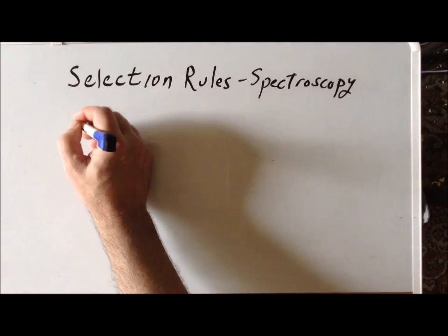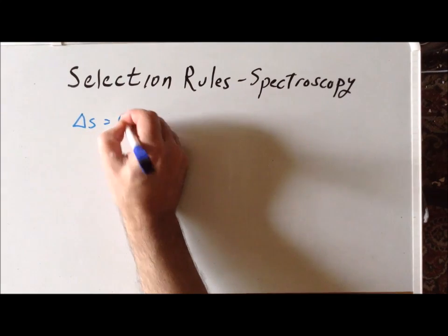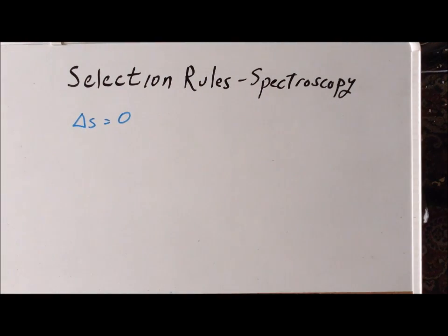The first important rule that we have is ΔS being equal to zero. So this is the change in the spin angular momentum of electron. It's not going to change during the absorption or emission of electromagnetic radiation because those particular types of radiation do not specifically interact with the spin. We'll see later on that there is an interaction between the spin angular momentum and the orbital angular momentum of a particular electron and that this interaction is called spin-orbit coupling.